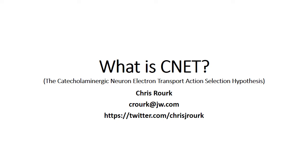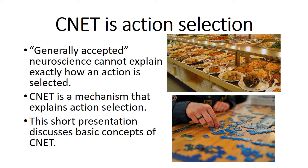My name is Chris Roark. In this presentation I will discuss the main concepts relating to CNET, the Catecholominergic Neuron Electron Transport Action Selection Hypothesis. There is no consensus in neuroscience as to how a specific action is selected. While there are explanations of mechanisms related to action selection, why a person would choose one of two or more actions cannot be explicitly explained, such as when making a selection from a buffet or selecting a specific puzzle piece when assembling a jigsaw puzzle. The CNET mechanism can provide that explanation.